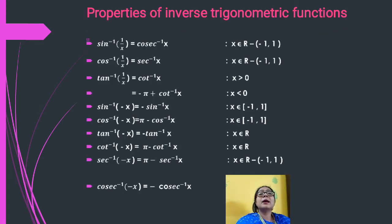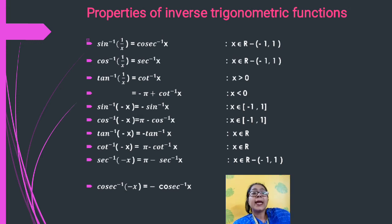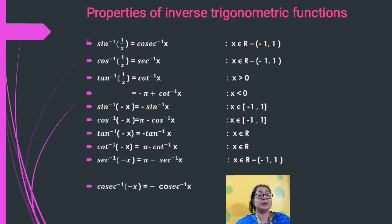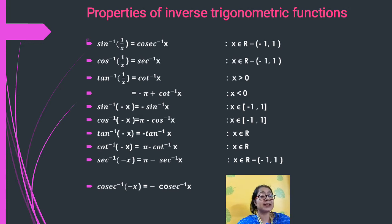Next properties: sin⁻¹(1/x) = cosec⁻¹(x), where x belongs to real numbers except (−1, +1). Similarly, cos⁻¹(1/x) = sec⁻¹(x), and tan⁻¹(1/x) = cot⁻¹(x). Also, sin⁻¹(−x) = −sin⁻¹(x). Cos⁻¹(−x) = π − cos⁻¹(x), and tan⁻¹(−x) = −tan⁻¹(x). Cosec⁻¹(−x) = −cosec⁻¹(x).